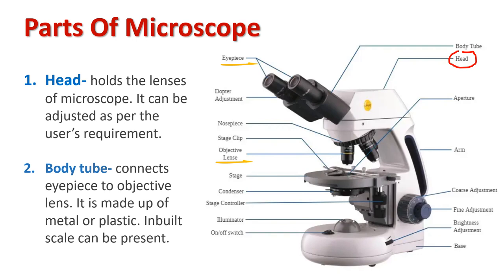The height of the head can be adjusted as per the requirement of the user. The second part is the body tube. The body tube is a part that connects the eyepiece to the objective lens. It is made up of metal or plastic. Some body tubes have an inbuilt scale which helps the user to measure the object.